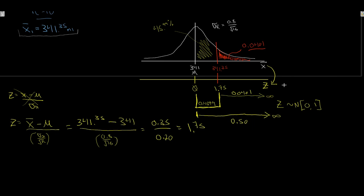Therefore, the probability of getting an average fill volume of 341.35 mL or more in our sample is 0.0401 — that's actually a pretty unlikely result. If I was the quality control analyst, I'd say that's a significant overfill. It was very unlikely to calculate that average from the sample, so maybe the machine needs to be recalibrated — it's probably overfilling.